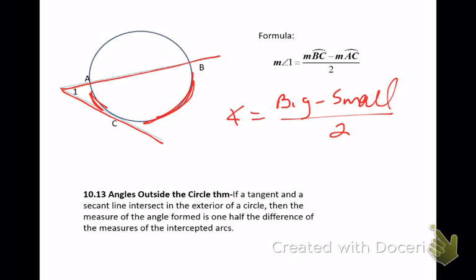Obviously you can't go small minus big divided by 2 because that would give you a negative angle measure, and we can't have negative angle measures. So it's the bigger one minus the smaller one divided by 2. The other arc out here we don't really care about unless we need it to find one of the other two — we're not going to use it to help us find the angle directly.